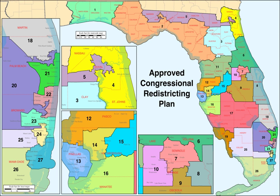Florida continued to grow its congressional delegation, reaching nineteen seats from 1973 to 1993. Following the 1990 census, Florida gained four more seats in reapportionment.